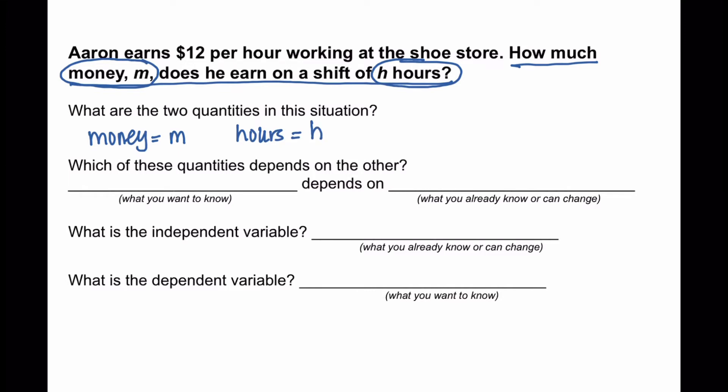The second question says which of these quantities depends on the other? So we need to ask ourselves, what do we want to know versus what do we already have or what can we change?